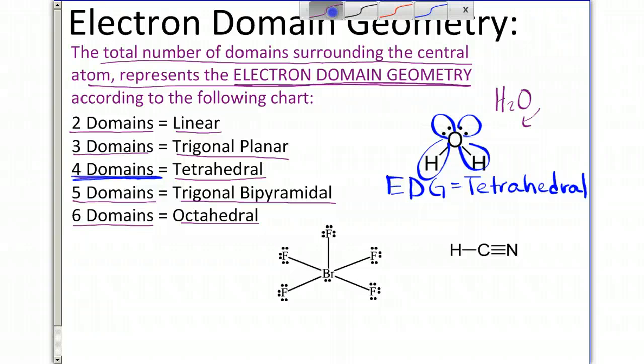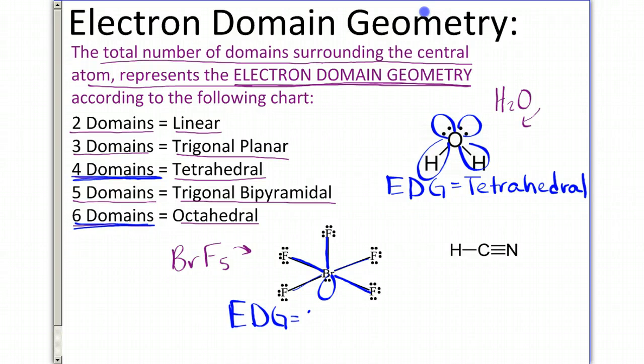For BrF5, which is this one, recall that it had five domains, I'm sorry, six domains when we counted it. We have one, two, three, four, five, and six. Six domains is known as octahedral. So I would label this as an electron domain geometry equal octahedral.